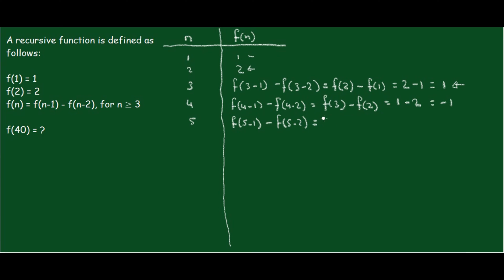That gives us f(4) minus f(3). We know that f(4) is negative 1, and f(3) is 1, so that's negative 1 minus 1, which equals negative 2. So f(5) = negative 2.